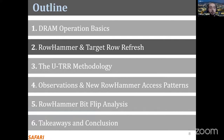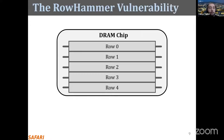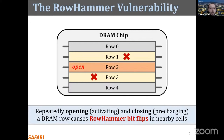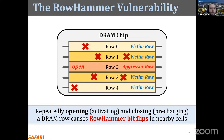Now let's look at rowhammer and the currently employed protection mechanisms. To access a DRAM row — say row 2 — the memory controller issues an activate command to open the row, then performs a precharge command to close it. Due to increased cell interference as a result of increased packaging density, rapidly activating a row many times can cause bit flips in nearby rows. If you continue to access the row even more, even more bit flips can occur. This phenomenon is known as rowhammer. We refer to the rapidly activated row as an aggressor row and the rows containing bit flips as victim rows.